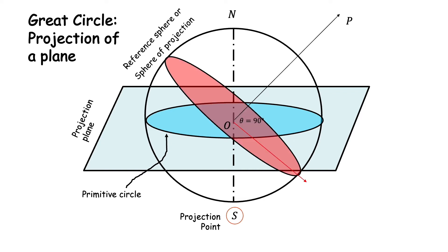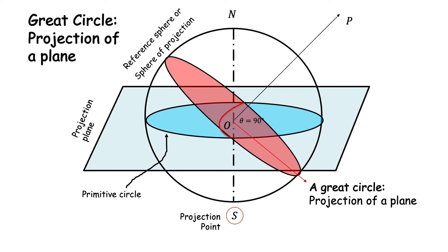Why a small circle? To contrast it with a great circle, which is the projection of a plane. If we consider a cone whose semi-apex angle theta equals 90 degrees, the cone degenerates into a plane passing through the center of the sphere. A plane passing through the center of the sphere cuts it in the largest possible circle, which is why these are known as great circles. The projection of such a circle onto the projection plane, shown here as the red curve, is also a circle and is known as a great circle.